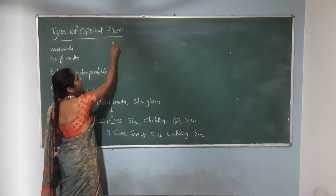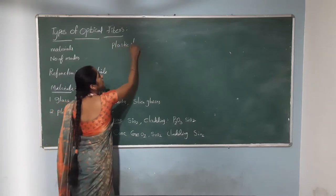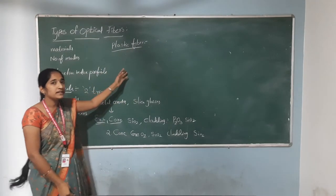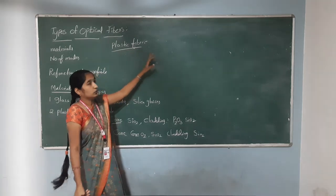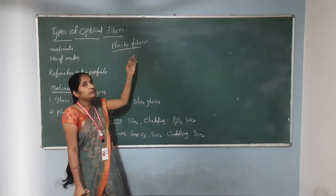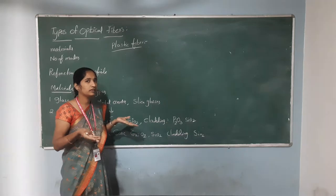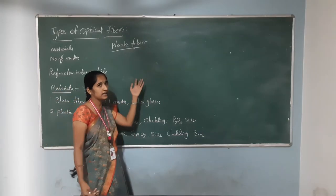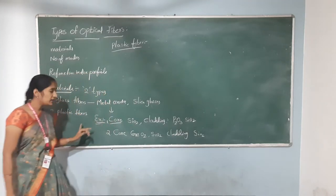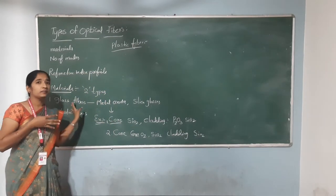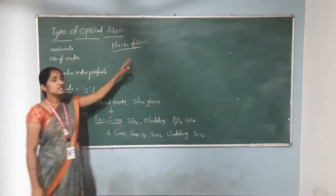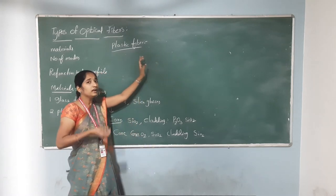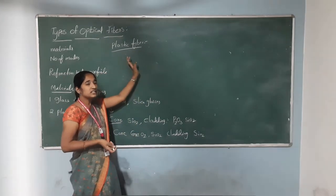Now let us discuss about the plastic fibers. Plastic fibers are made up of plastic. We can handle the plastic fibers without any special care because of the toughness and durability of the plastic fiber. Glass fibers, on the other hand, need to be handled with care since they are fabricated from glass.